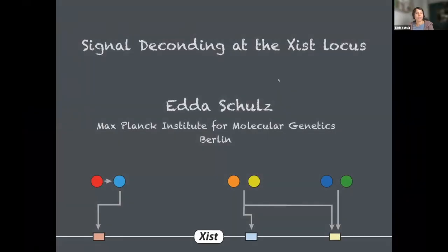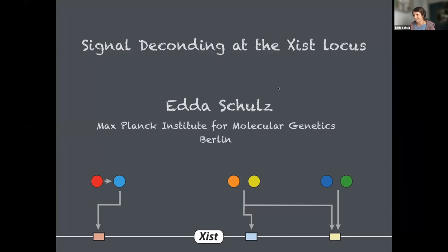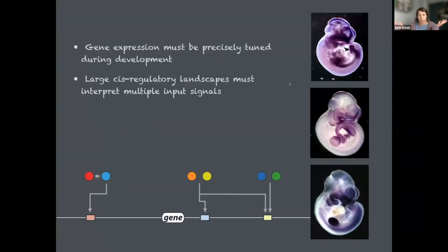Thank you. I'm really happy to be here. My talk has a slightly different focus than the rest of the session, but I hope it's interesting nonetheless. As my title says, I'll be talking about how multiple signals can be decoded by the gene regulatory landscape of a gene, using the XIST locus as a model. In complex multicellular organisms, gene expression must be precisely tuned both temporally and spatially to generate all the different cell types that build the organism. Developmental genes often have large cis-regulatory landscapes, perhaps because they need to interpret and decode multiple input signals.